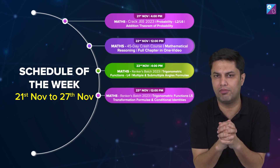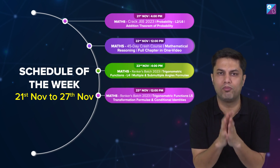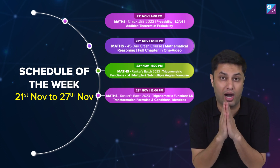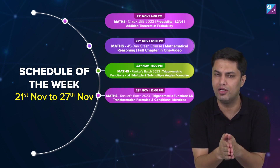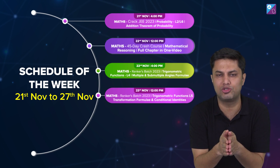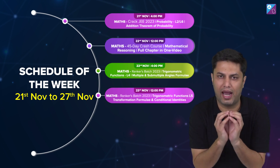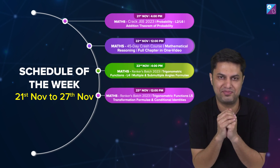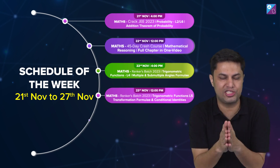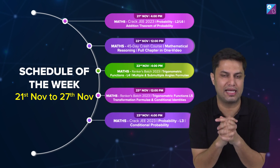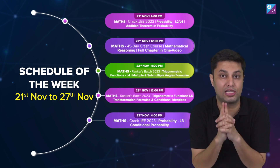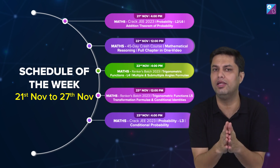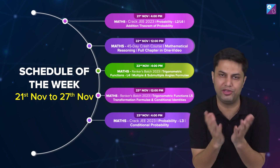Next, on 23rd November, Wednesday at 12 p.m., we'll meet for the next lecture in the Rankers Batch covering Cosine and Sine AP series. Then on Wednesday at 4 p.m. we'll meet in the Excel JEE batch for Probability Lecture Number 3, where we'll do conditional probability and independent events — questions and theory.